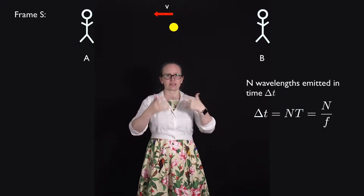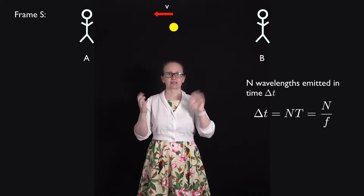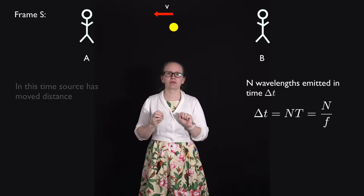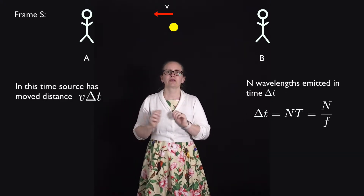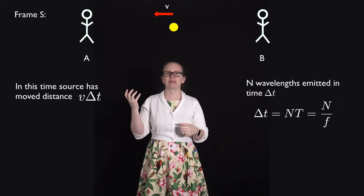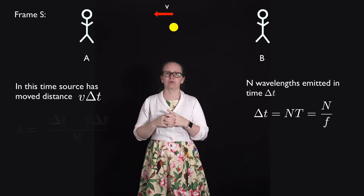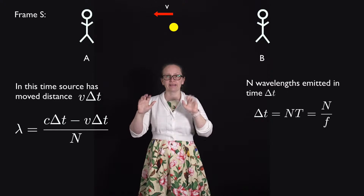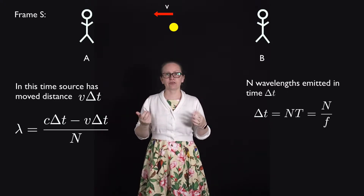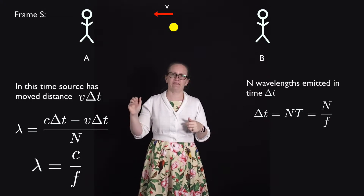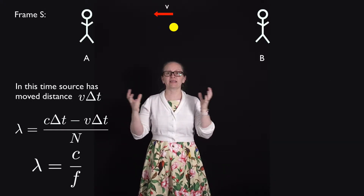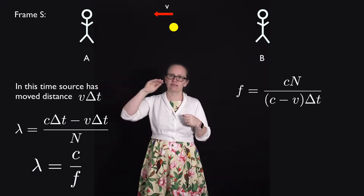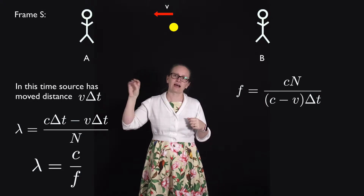During the time delta T that the source is emitting these wavelengths, it's moving towards Observer A, so it has moved a distance V delta T. The wavelength observed by Observer A is therefore equal to C delta T minus V delta T, divided by N. Since the wavelength also equals C divided by F, combining these two equations gives F equals C times N divided by (C minus V) times delta T.